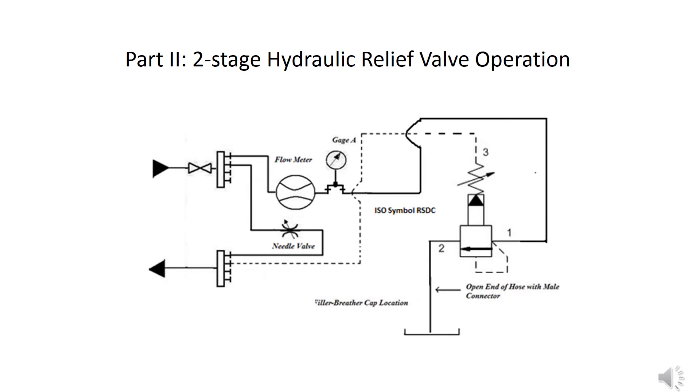Then, after obtaining that, we would then open up the needle valve. The hose coming from port number two of the relief valve is directed to the filler breather cap. With a male connector in the end of that hose, you would actually be able to see the oil coming out of it. So, obviously, when the valve is closed, we would see no oil coming out of the hose. Although, in reality, there is always a little bit of a drip.